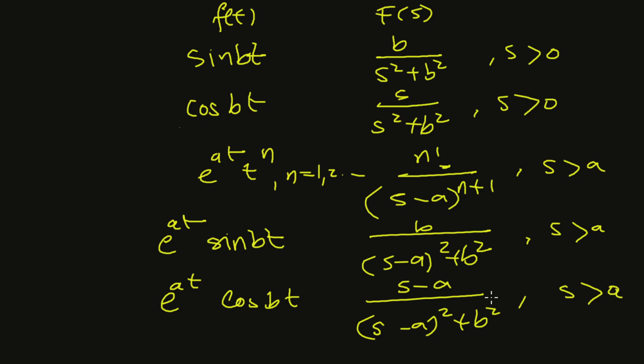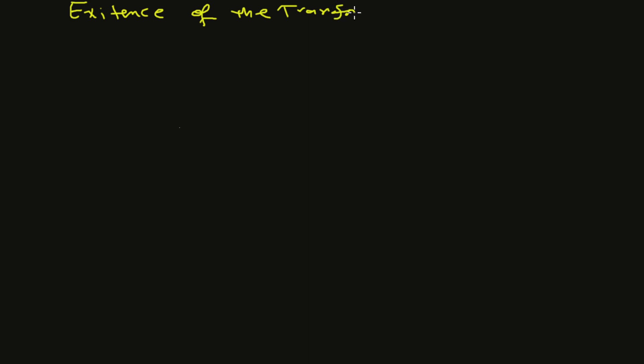This is a brief table and you can use these as a reference — you know how they came about from using the definition. Another thing to discuss is the condition needed for the existence of the transform. There are functions for which the improper integral fails to converge for any value of s.